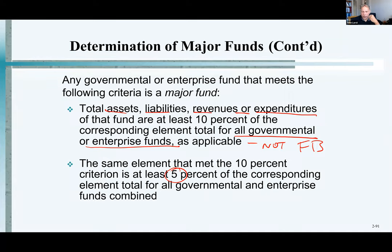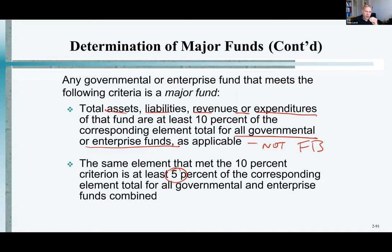What GASB did was something similar for governments. The reason they did this is they said, look, we're talking about the different fund types. There's only one general fund, but we have the special revenue fund, the debt service fund, capital project fund, permanent fund, and enterprise funds that make up our business-type activity column on our consolidated statements. And then we show all that fund-related data. But an entity — a government — could have hundreds of funds. They could have one general fund, they could have several special revenue funds.